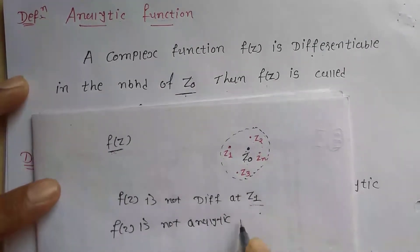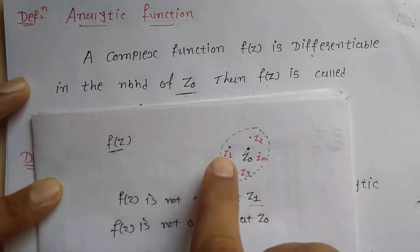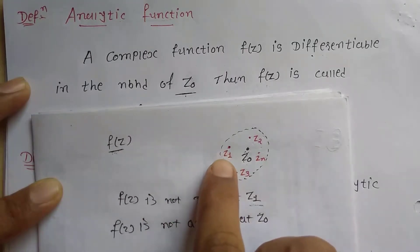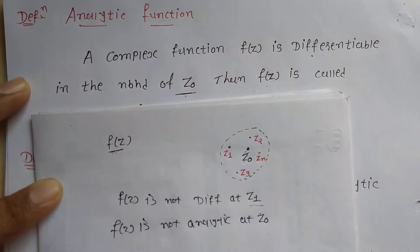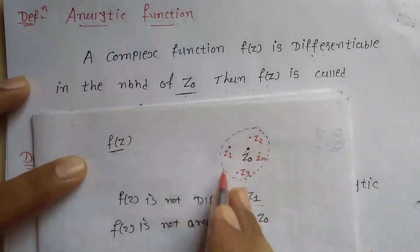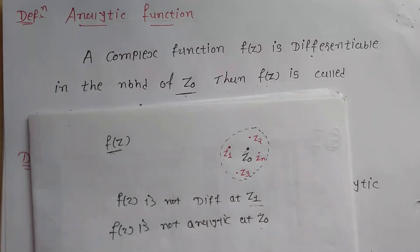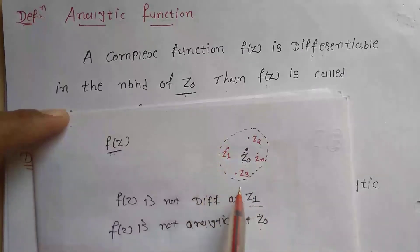Because f(z) is not analytic at z1, and z1 is in the neighborhood of z0, f(z) is not analytic at z0 either. z1 being in the neighborhood of z0 means the differentiability condition fails in the neighborhood of z0. This is the difference: analytic at z0 requires differentiability at z0 and throughout its neighborhood.